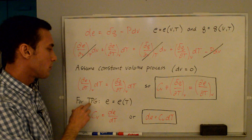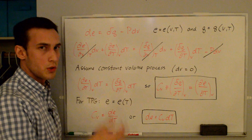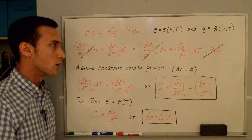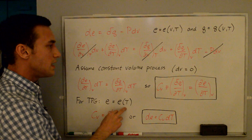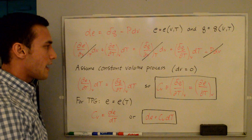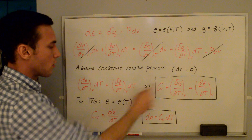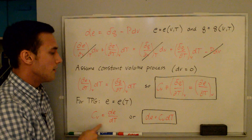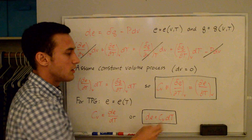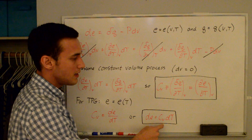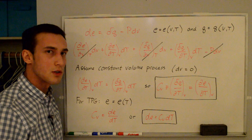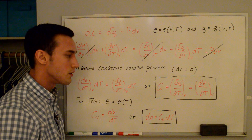If we make the assumption that we have a thermally perfect gas — and I have another video on this linked in the description — then the energy is just a function of temperature, no longer a function of specific volume. Since E depends on only one variable, the partial derivatives become normal derivatives, so cv equals dE/dT. Rearranging gives dE equals cv dT. For a thermally perfect gas, cv is still a function of temperature. For a calorically perfect gas, the specific heats are constant by definition, so cv does not depend on temperature.